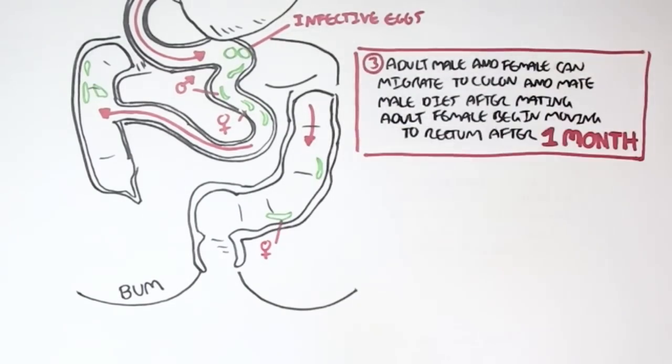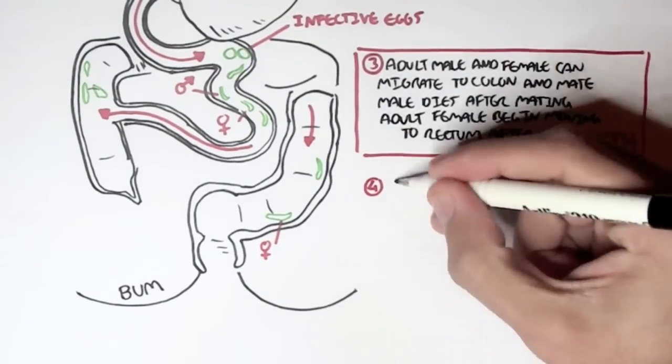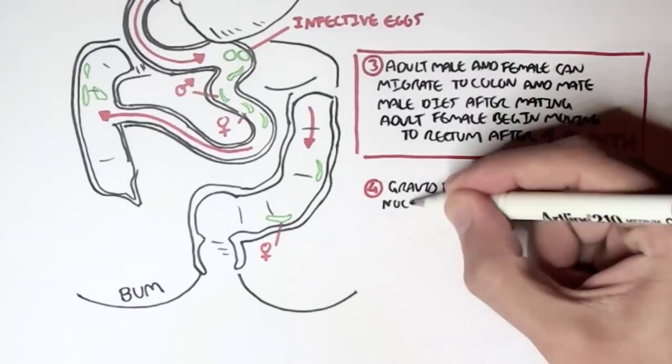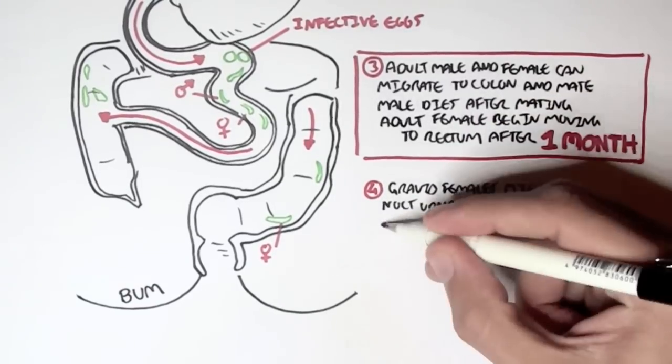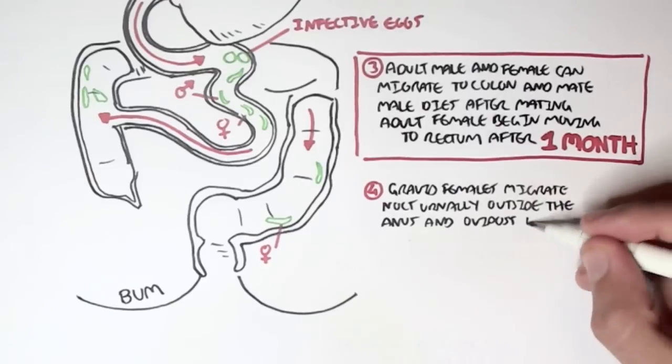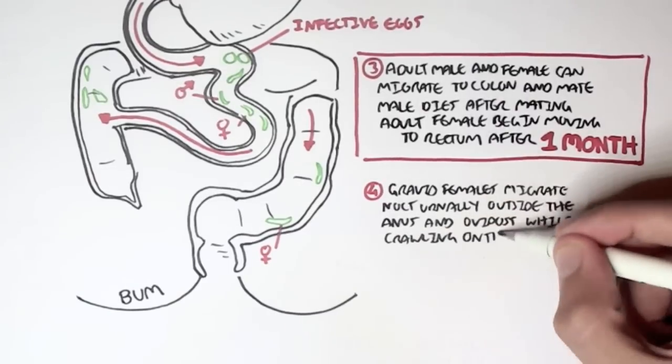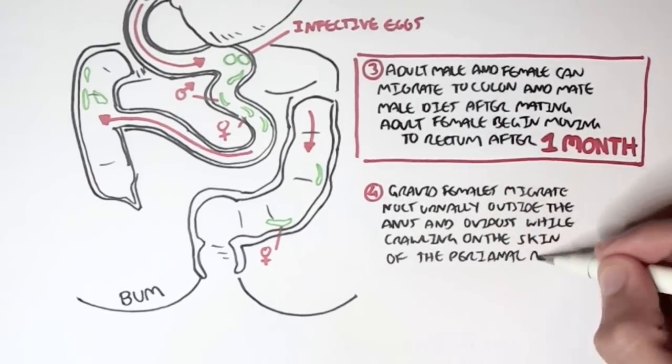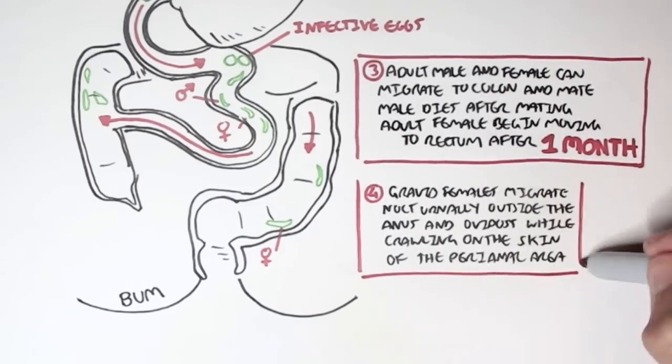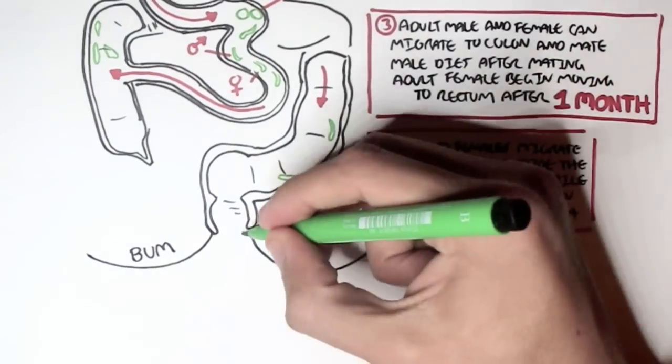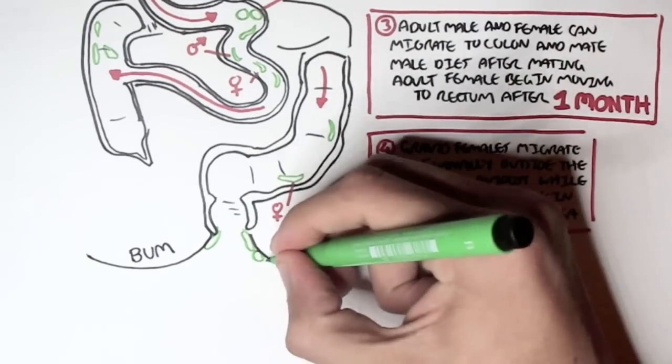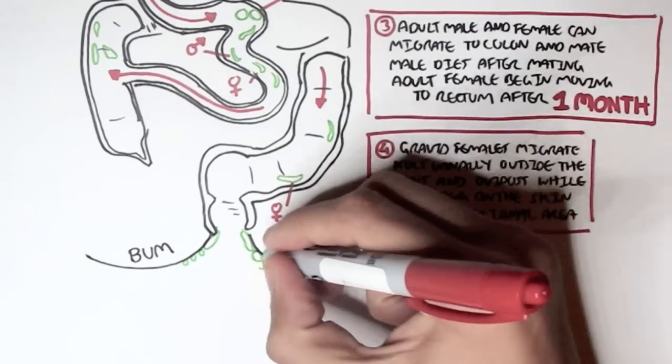Now the gravid female will migrate nocturnally outside the anus, and ovipost, which basically means lay eggs, while crawling on the skin of the perianal area. Meaning that the female worm will essentially go slowly out of the rectum and lay eggs in the bum area.